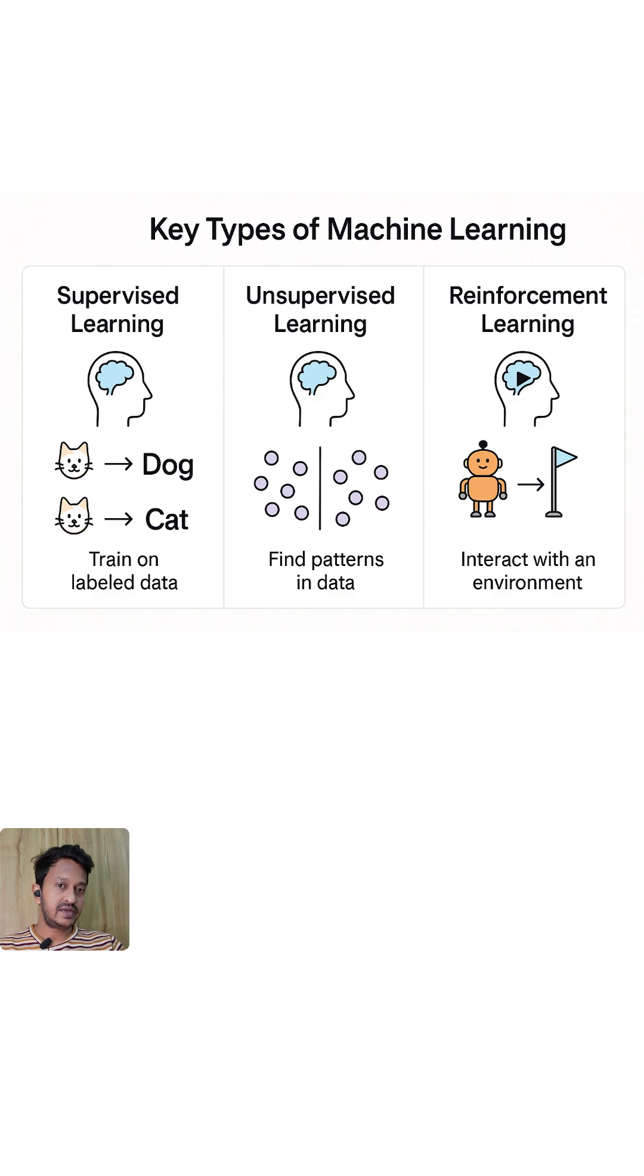And then there is unsupervised learning where the machines find patterns in the unlabeled data. So the data is not labeled here. And the example can be like group customers by behavior, sentiment analysis. And you might also see on Amazon, like people who bought this also bought that. So that's how unsupervised learning basically works.